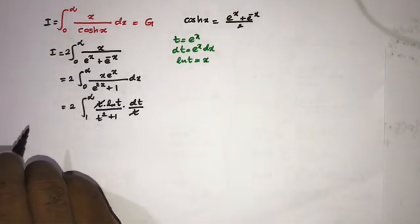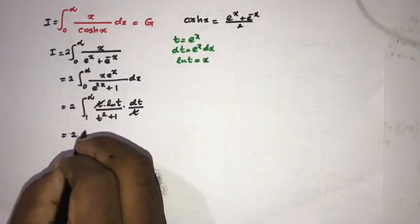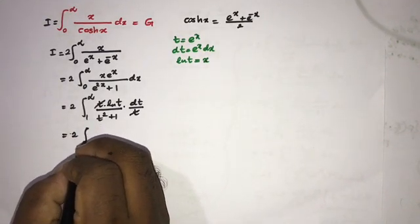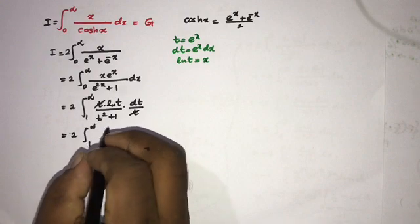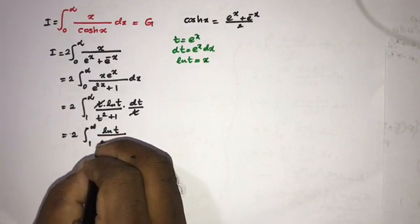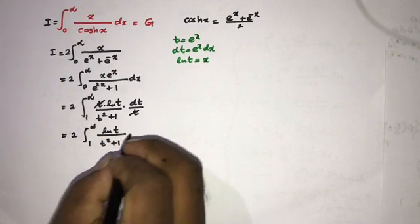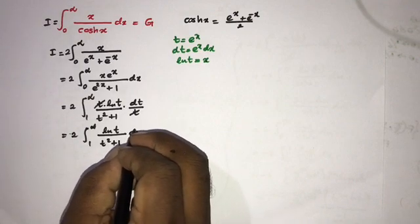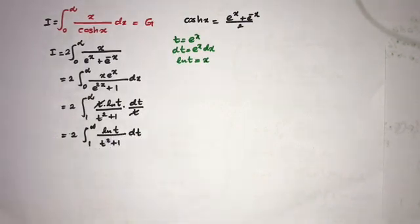After simplification, we have 2 times the integral from 1 to infinity of natural log of t over t squared plus 1, dt.